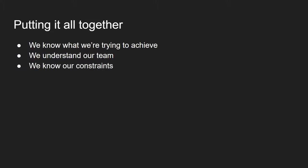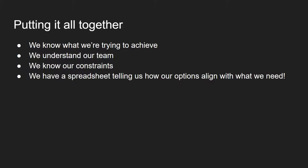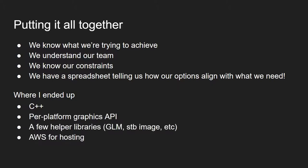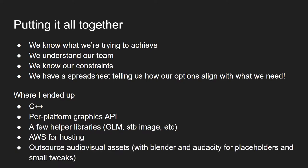Now, at last, we put it all together. We know what we're trying to do, we understand our team and our constraints, and we've got a spreadsheet which tells us how the available tools align with what we need. In my case, I'm targeting a wide range of platforms including lower-end devices, I have some ambitious goals in terms of graphics and performance, and I don't need to do any physics simulation, so I get a bit less benefit from a lot of those third-party game engines. So I narrowed down to a fairly manual approach: I'm using raw C++ with no engine, per-platform graphics APIs, a few helper libraries, AWS for hosting network games, and outsourcing pretty much all of the audio-visual work with some free tools for placeholders. This has worked out really well so far — the portability and performance seem very promising.